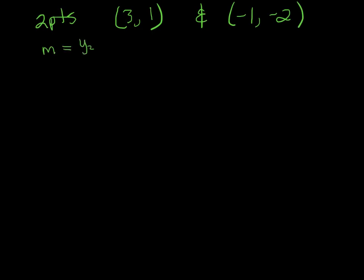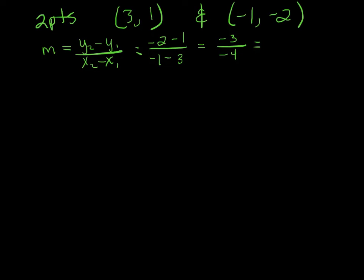The slope is y2 minus y1 over x2 minus x1. So we've got negative 2 minus 1 over negative 1 minus 3, and that gives us negative 3 over negative 4. Negative over negative, so we just write 3 over 4 — we've got a positive slope.